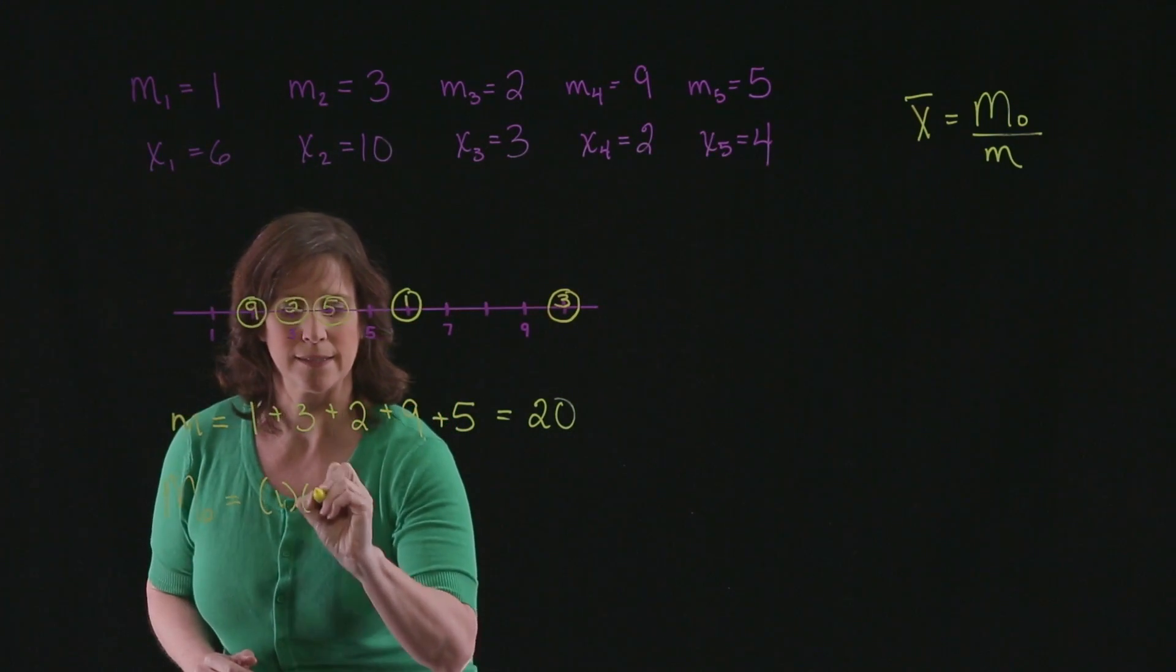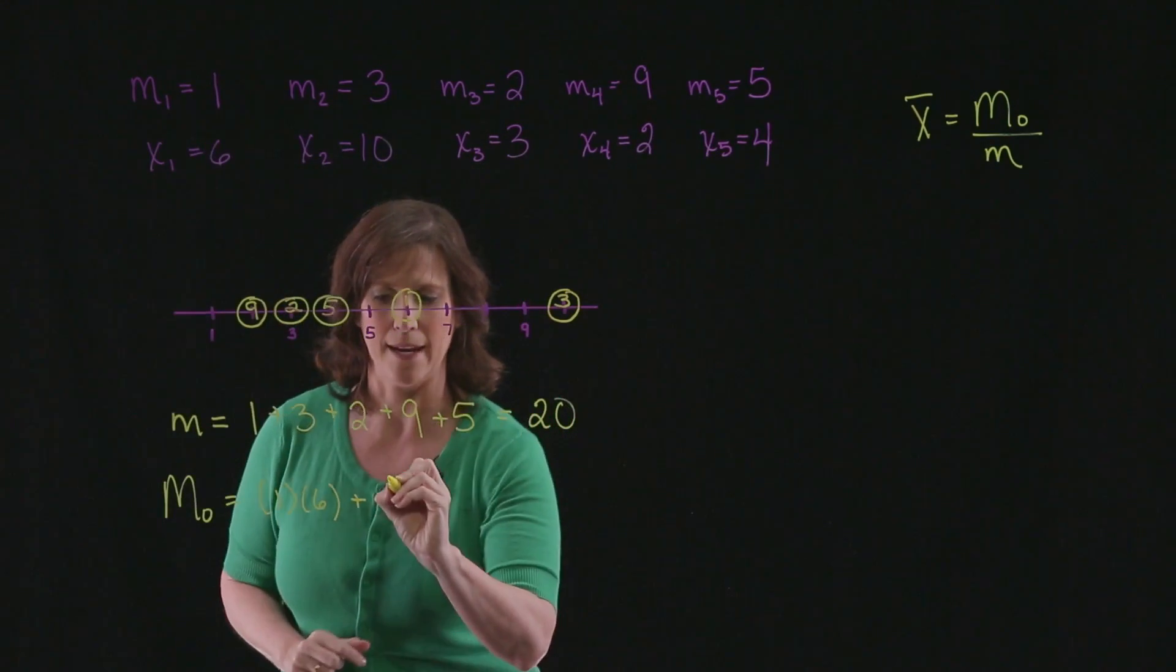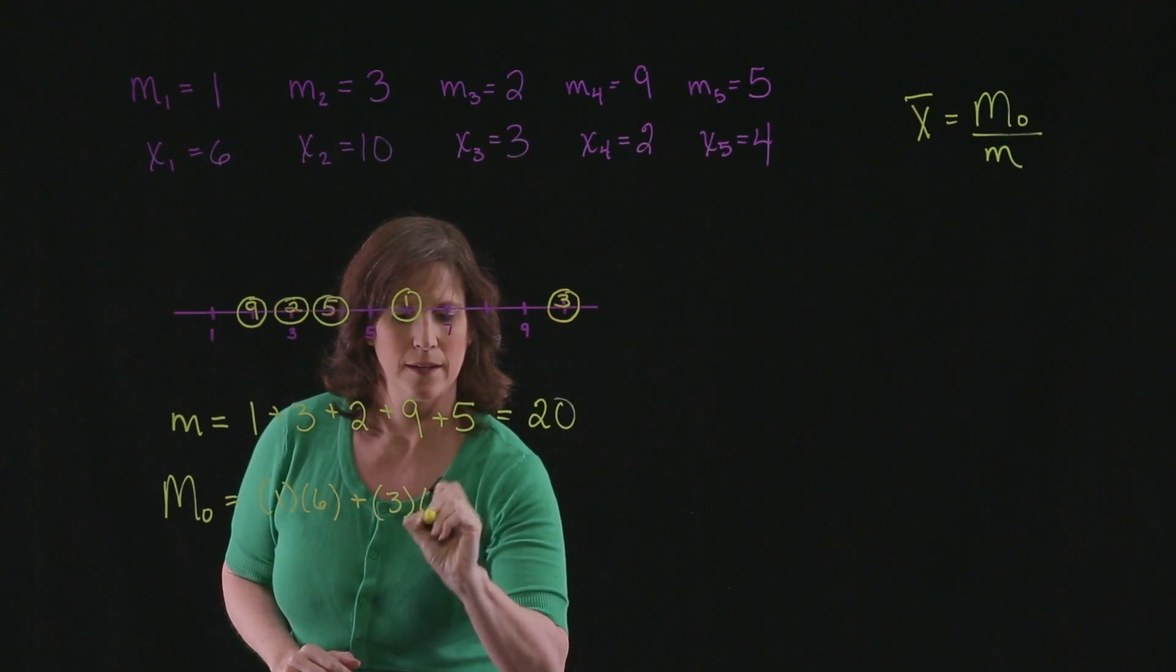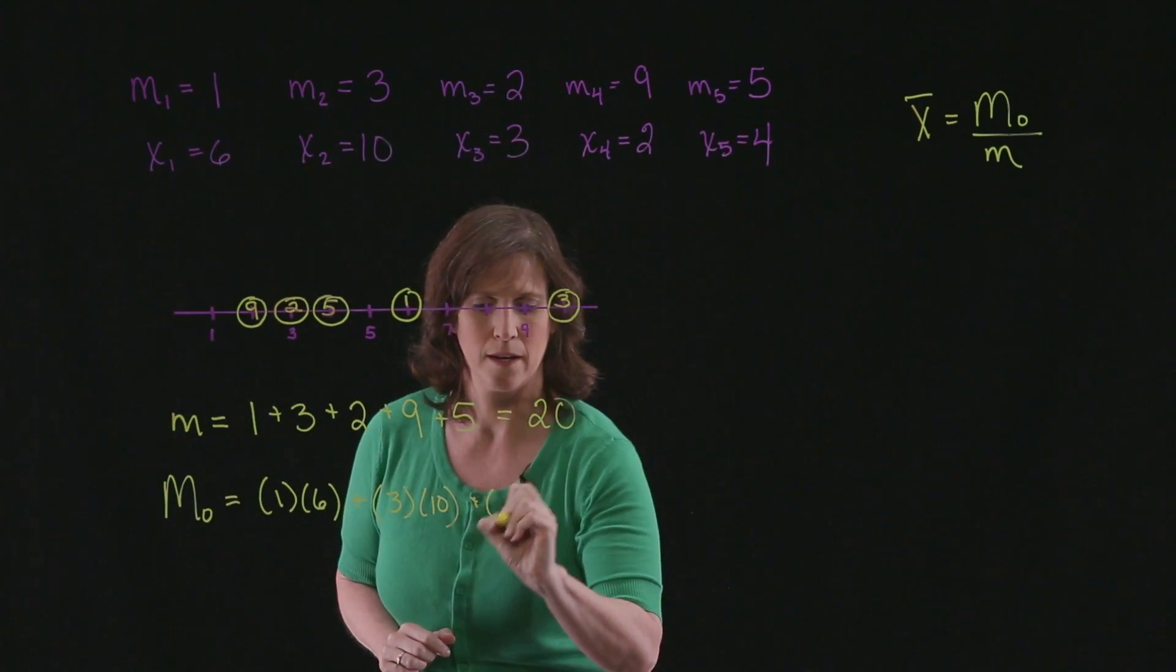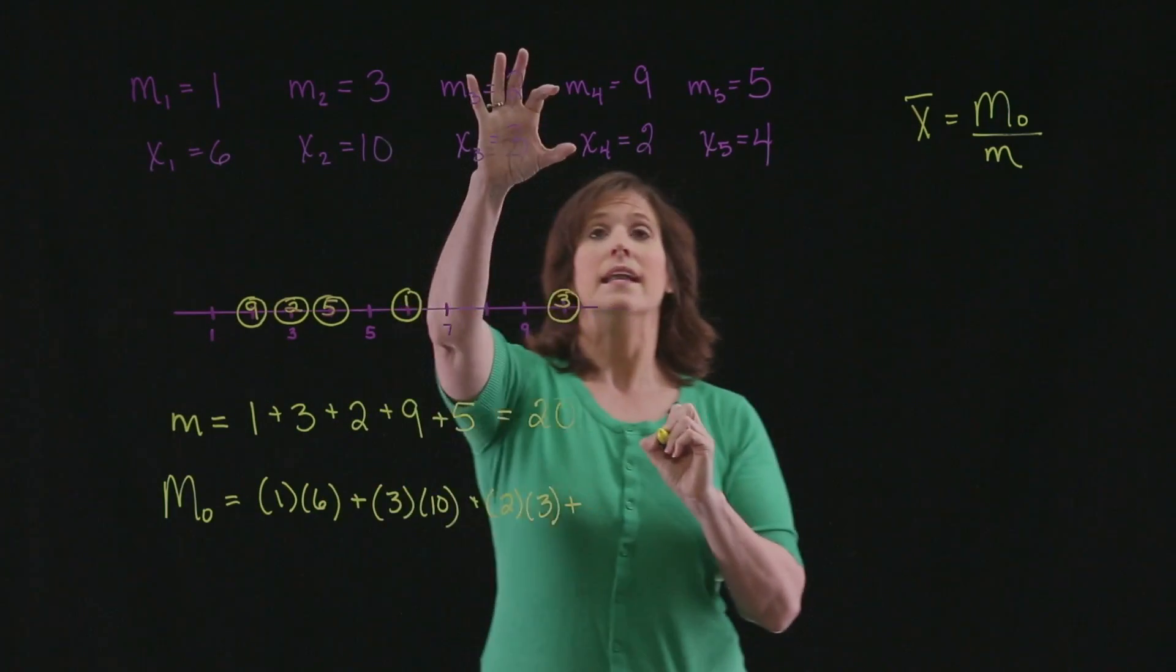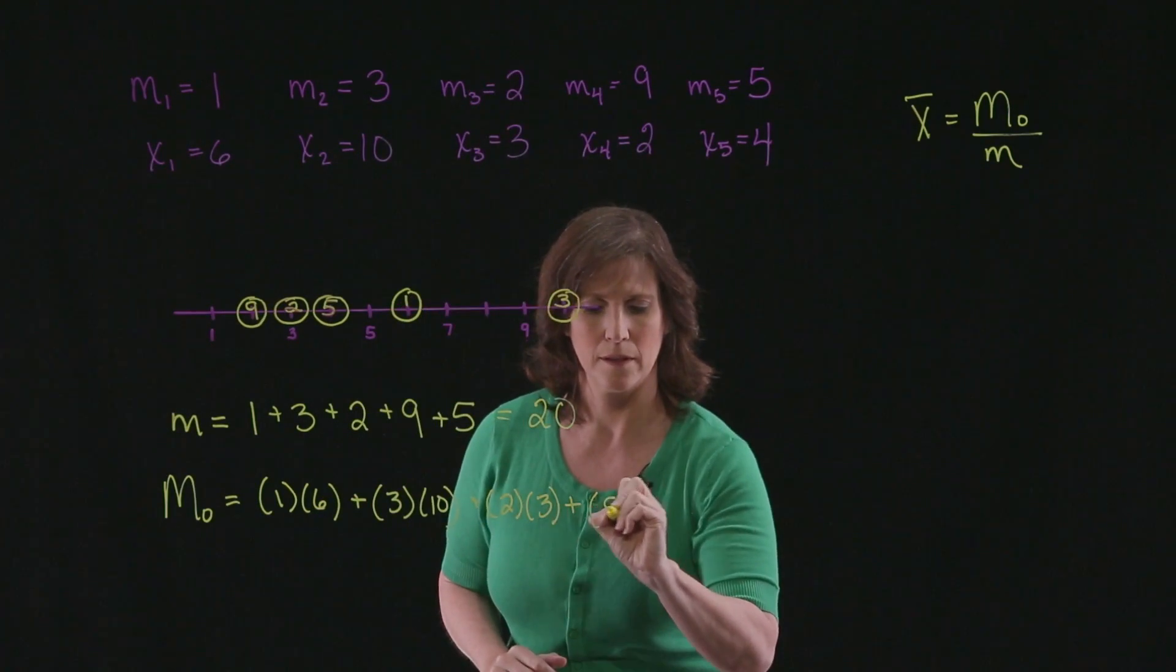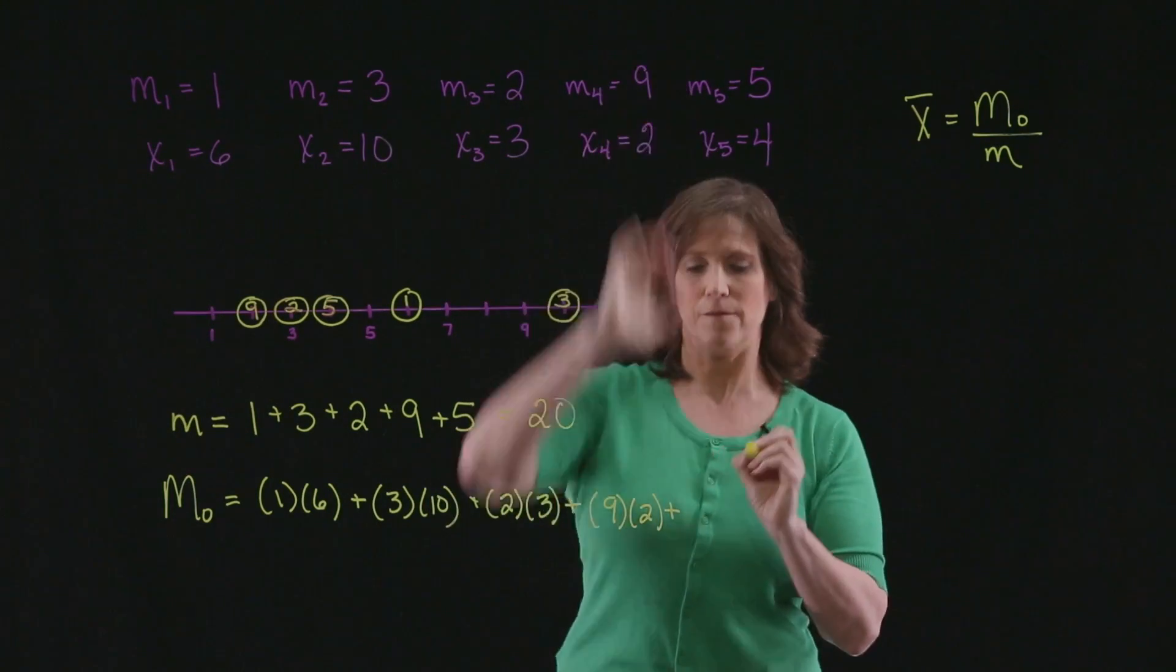So this will be 1 times 6. The second data point gives me 3 times 10. The third data point, 2 times 3, 9 times 2, and finally, 5 times 4.